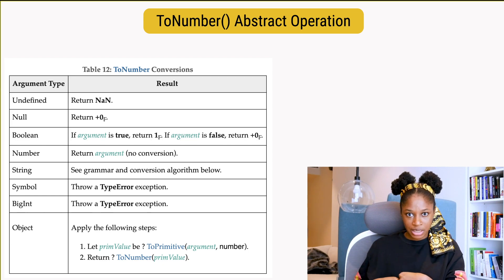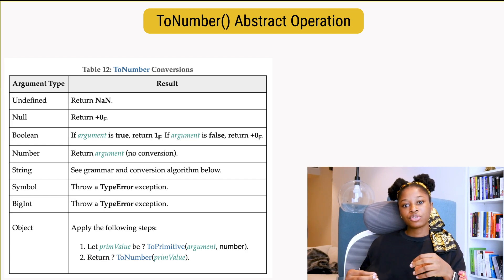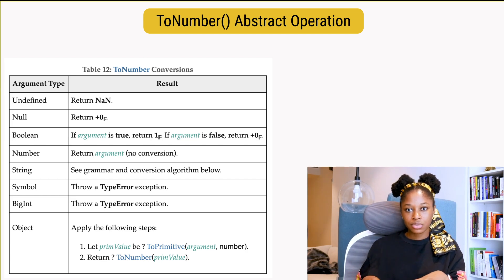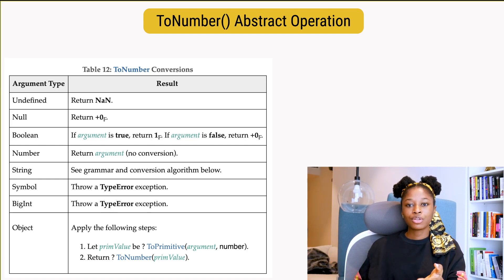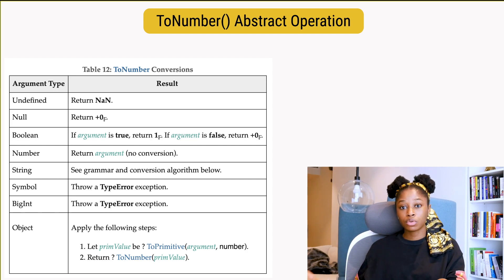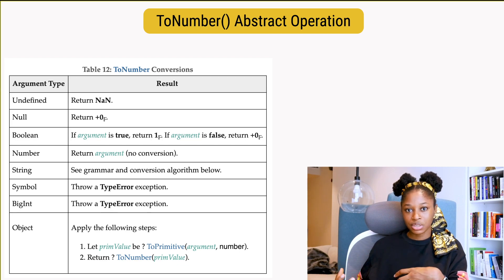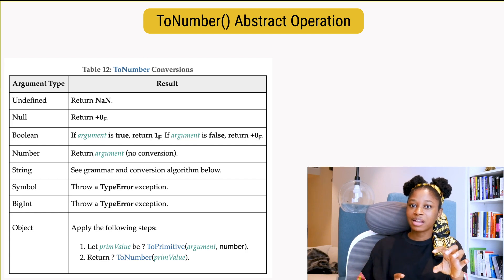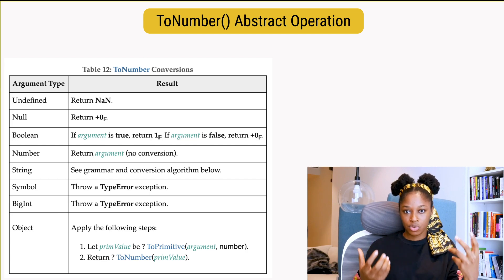And if you haven't seen it, you should check that out. The ToPrimitive abstract operation will be invoked to handle this, and number will be passed in as the hint. Since it gets number as the hint, the valueOf method will be called first. valueOf basically just returns itself, so it will call toString next. If it gets back a primitive value from toString, the ToNumber abstract operation will receive that primitive value as an argument and convert it to a value of type number.